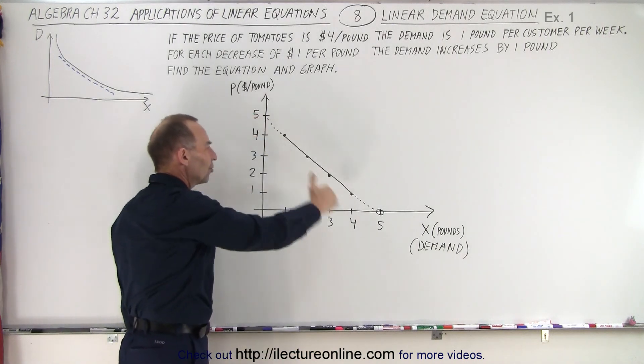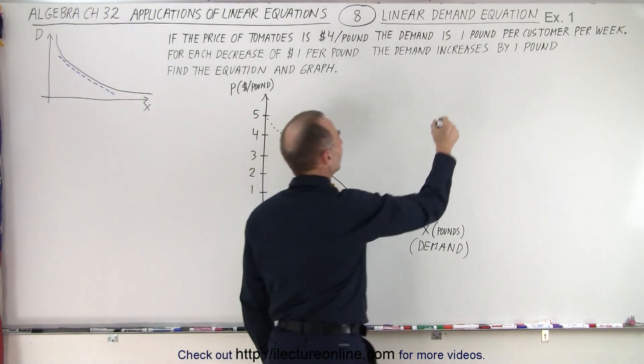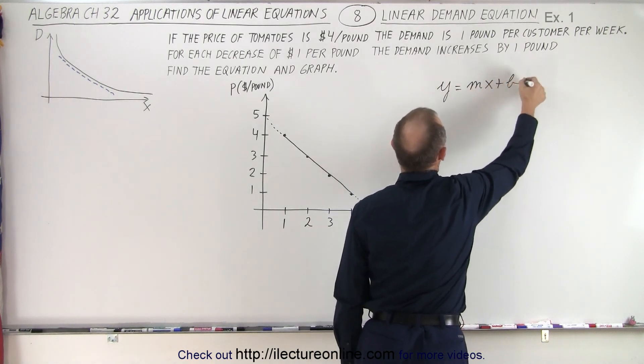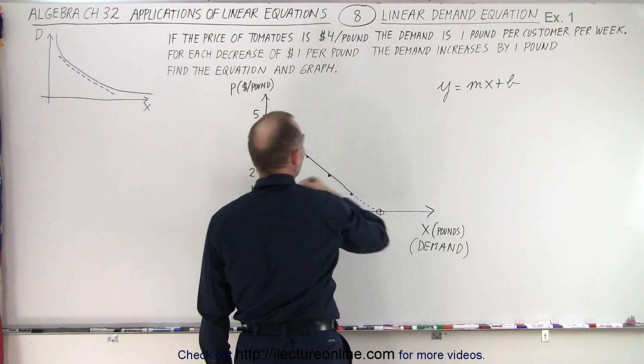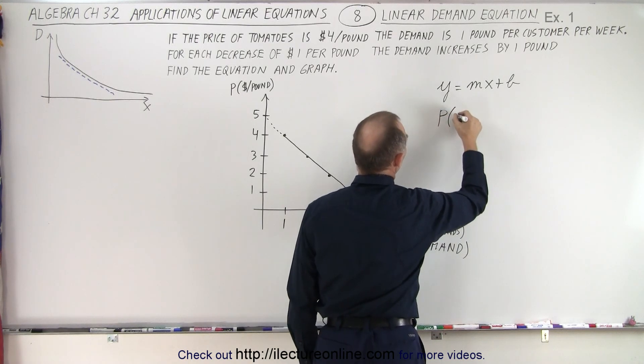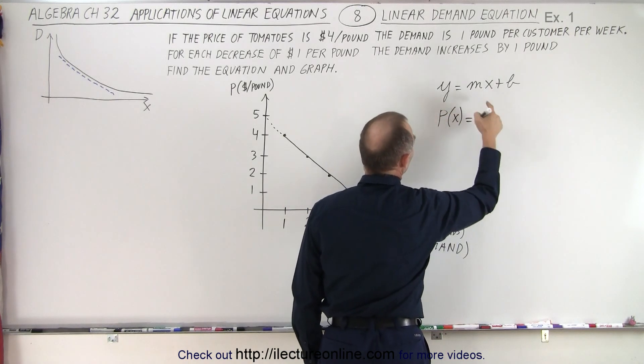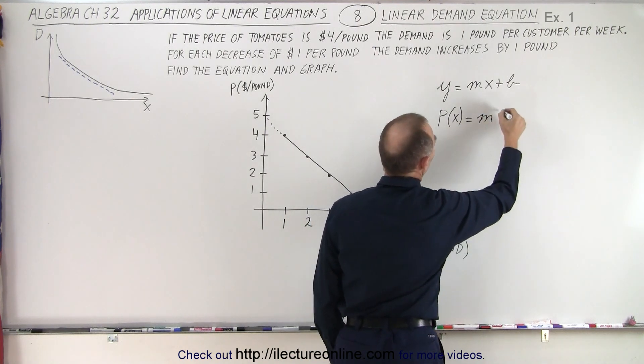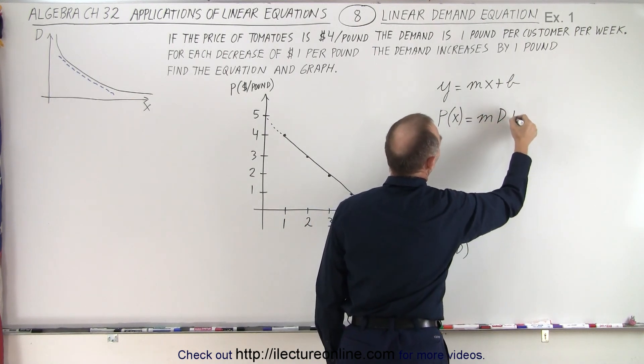Well, notice that this is a straight line equation. So it should look something like y equals mx plus b. So in this case, instead of y, we have p. And the p will be a function of x. And instead of x, we have demand. So maybe I want to put a d there. m times d plus b.